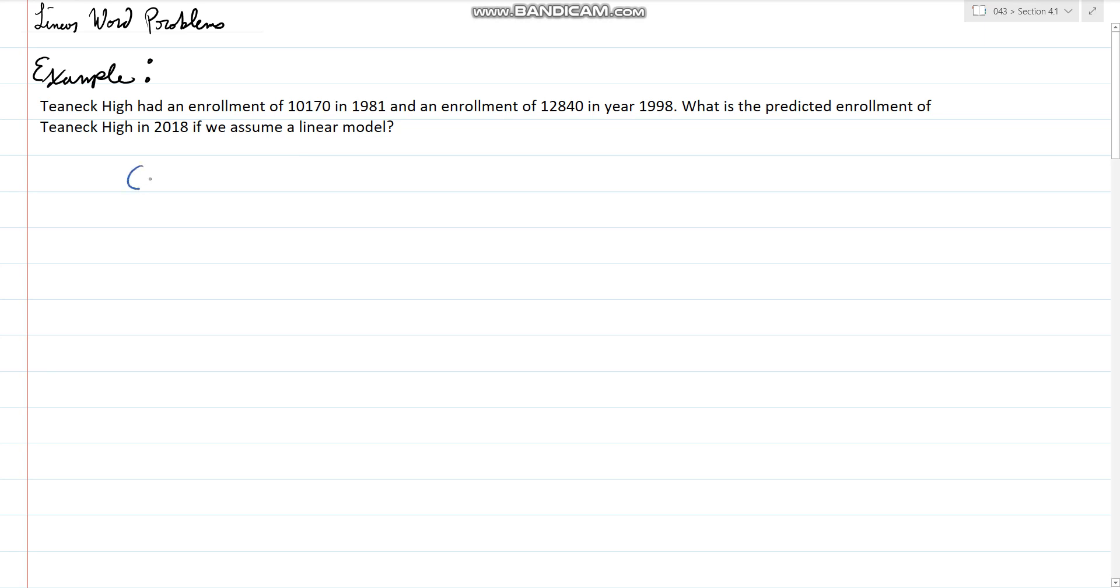We have one point which is 1981 and 10,170 students, and the other point is 1998 and 12,840 students. What they're asking is in 2018 how many students are there? So we're given two points and we're looking for that last point.